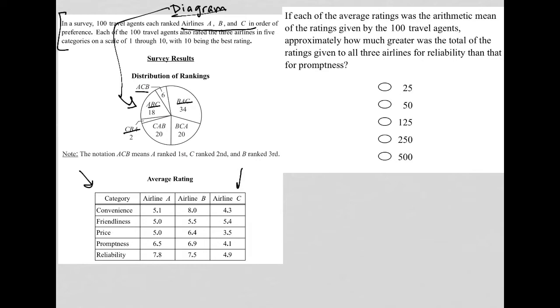And then for our average rating, we just have our average rating across five separate categories among the three airlines. So the question here says, if each of the average ratings was the arithmetic mean of the ratings given by the 100 travel agents,